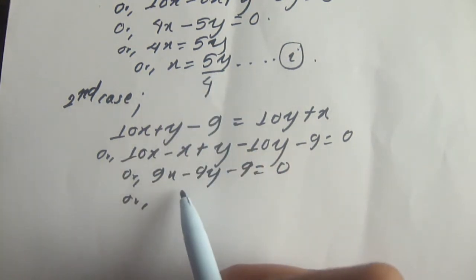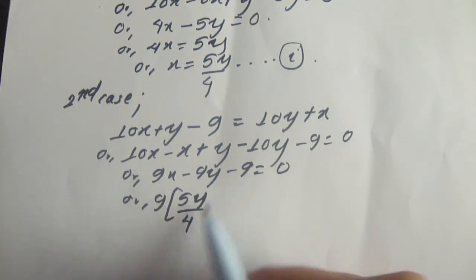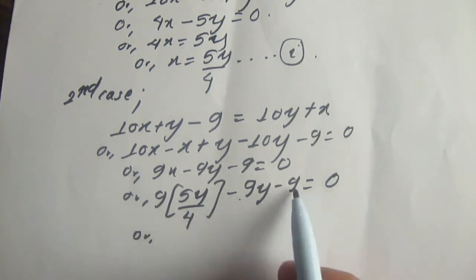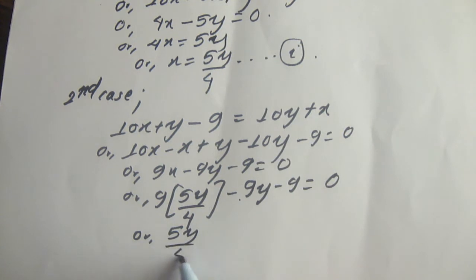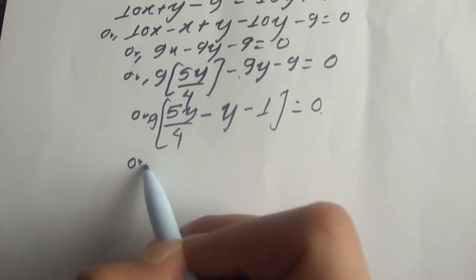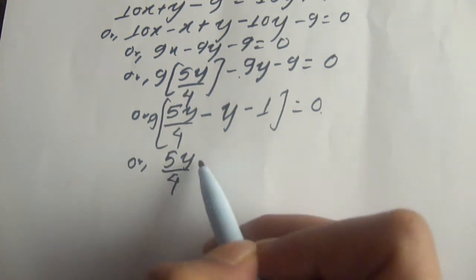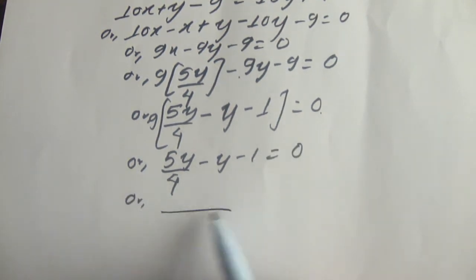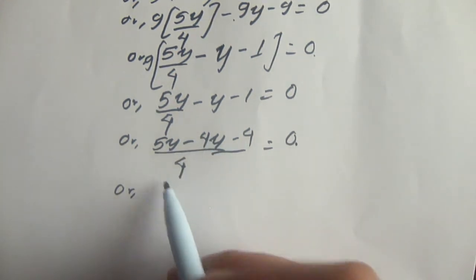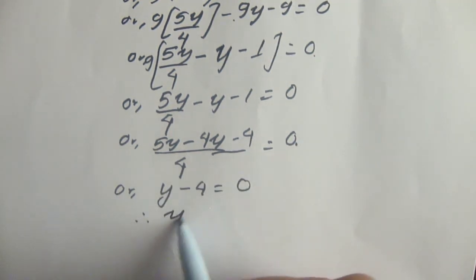Rearranging: 10x minus x plus y minus 10y minus 9 equals 0, which gives 9x minus 9y minus 9 equals 0. Substituting x equals 5y by 4, we get 9 times (5y/4) minus 9y minus 9 equals 0. Taking 9 common: 9(5y/4 minus y minus 1) equals 0, so 5y/4 minus y minus 1 equals 0.